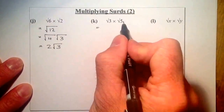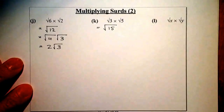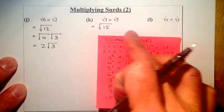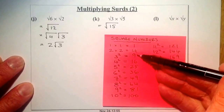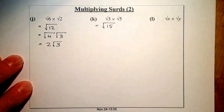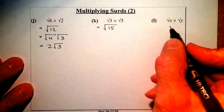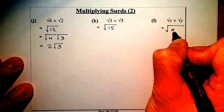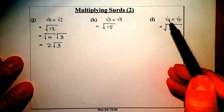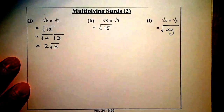I've got root 3 times root 5, which gives me root 15. Thinking about root 15, I can't use any of the square numbers below 15 — the 9 doesn't work, the 4 doesn't work — so root 15 is my final answer. We could also use this in algebra: if I've got root x times root y, that equals the square root of xy. Whatever numbers I have, I can combine them together under a square root sign and multiply them inside it.